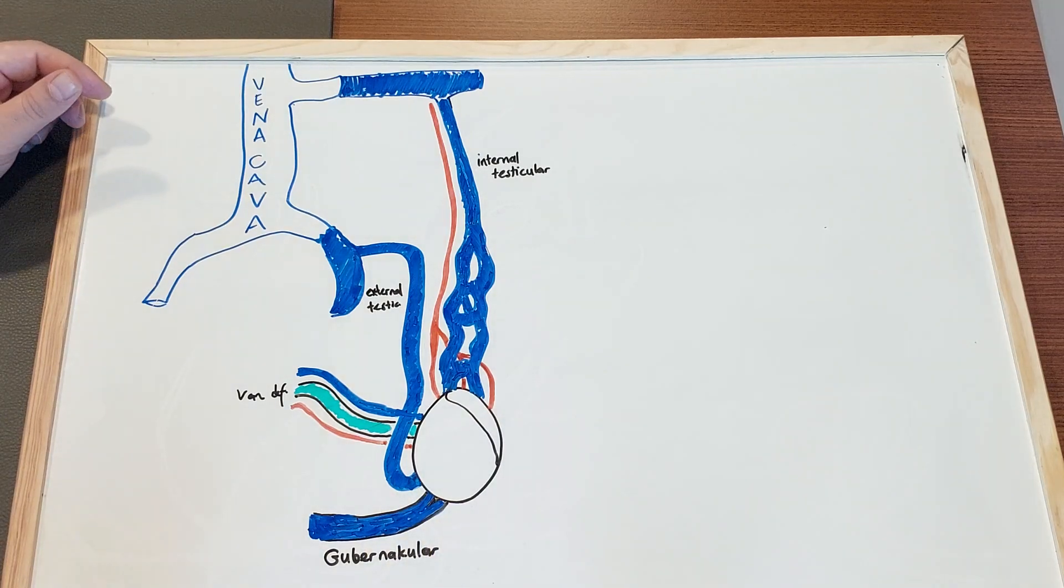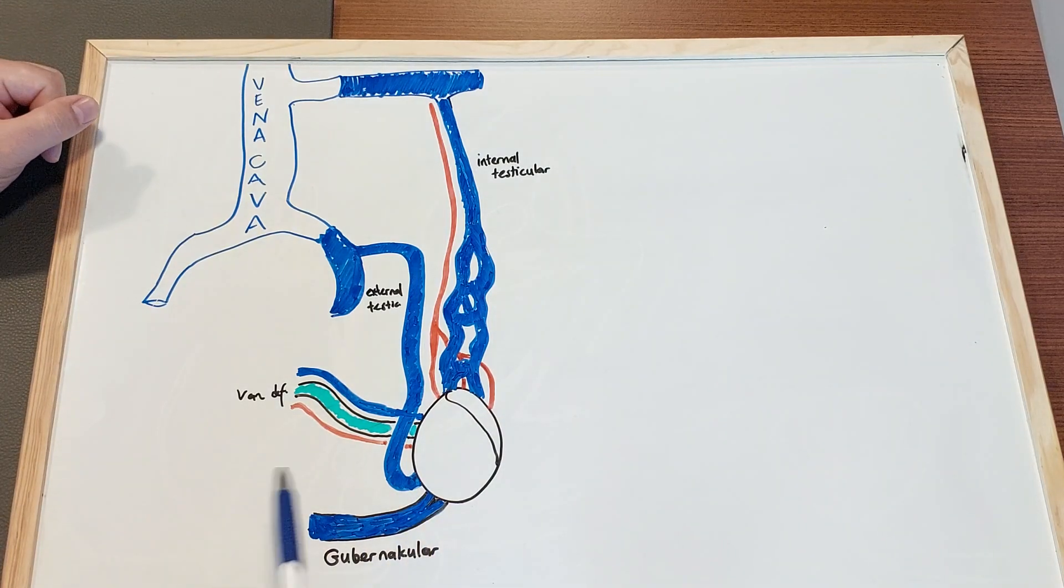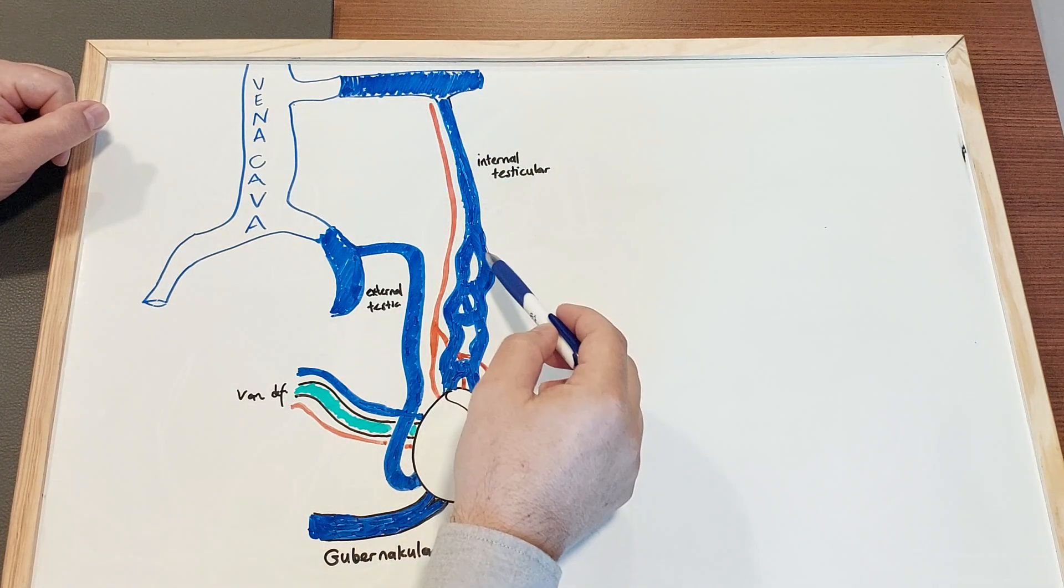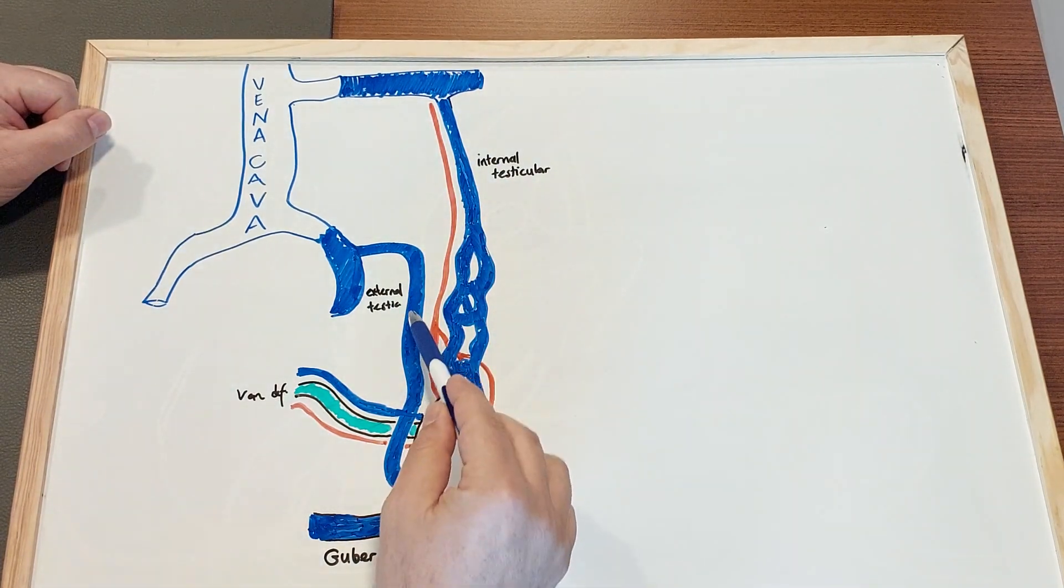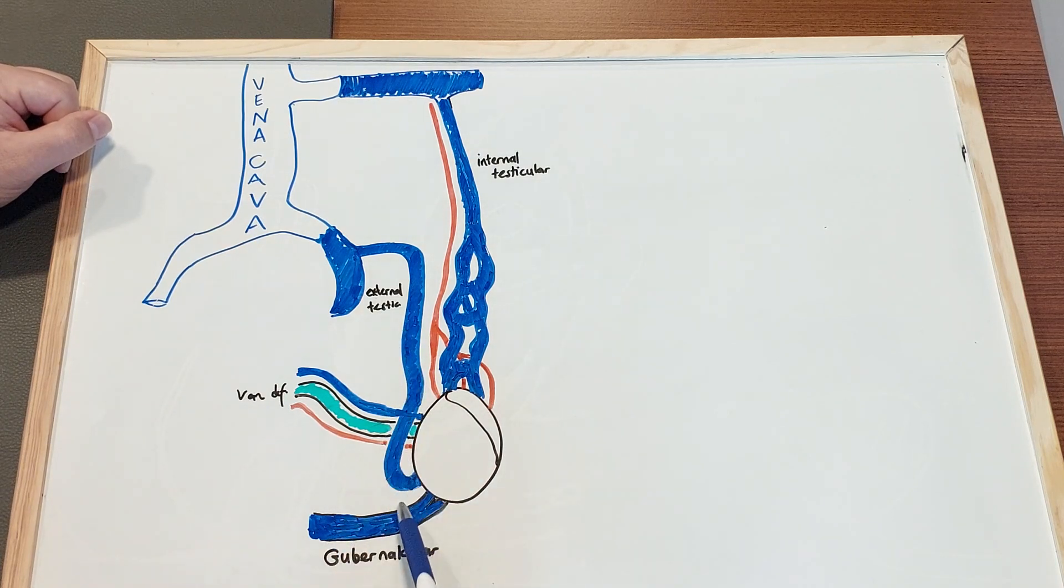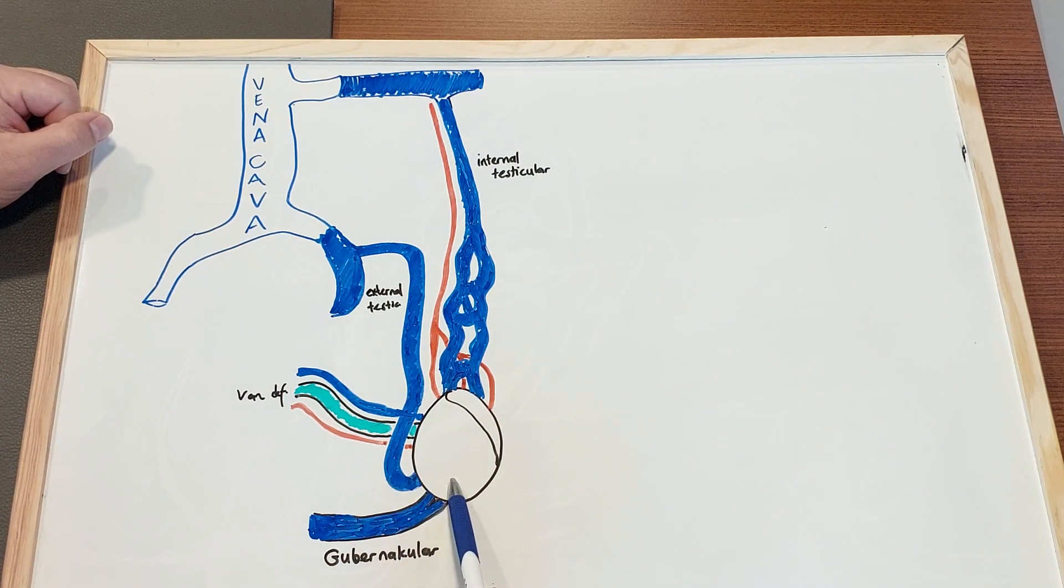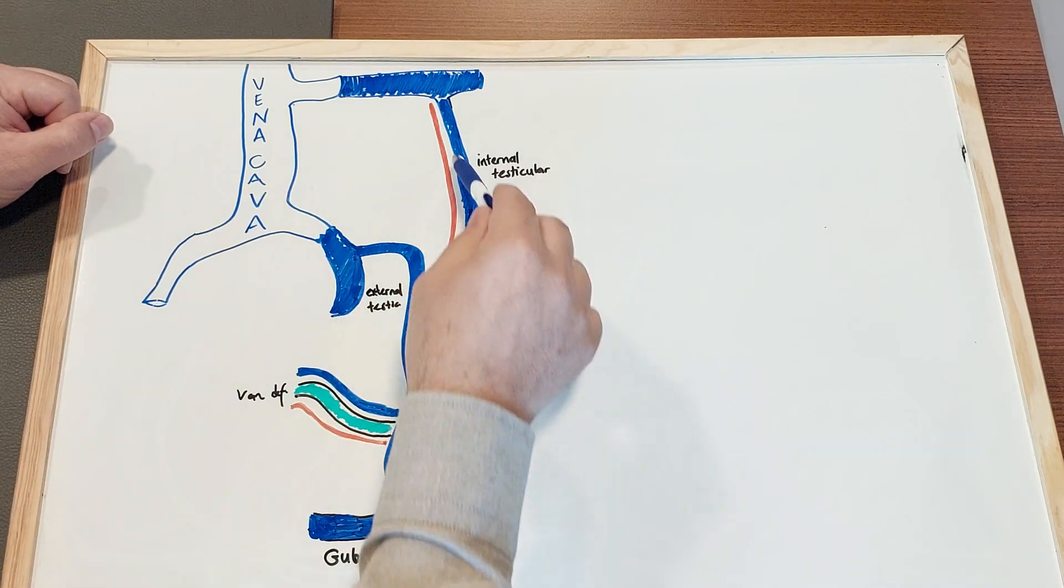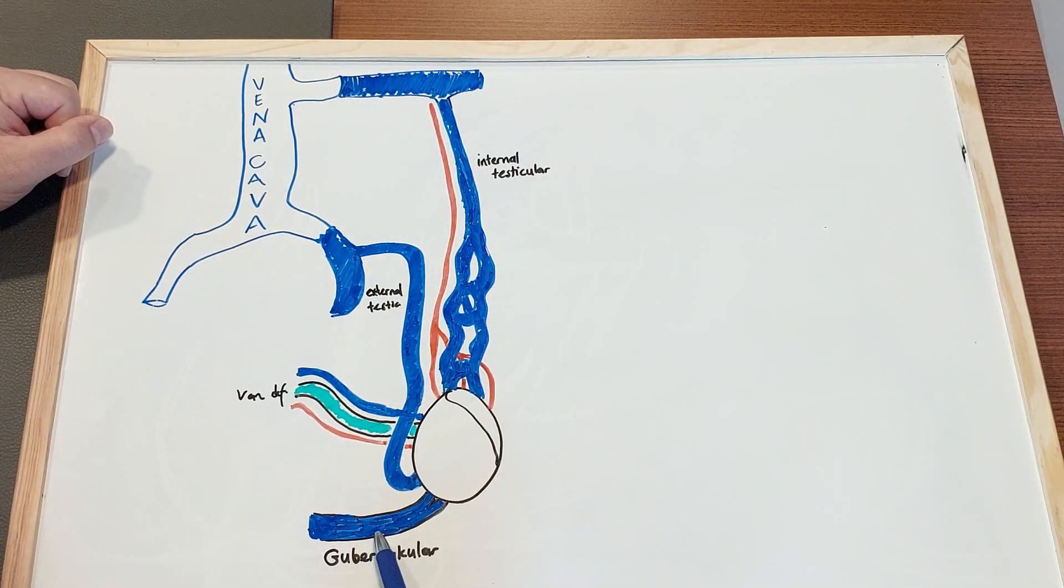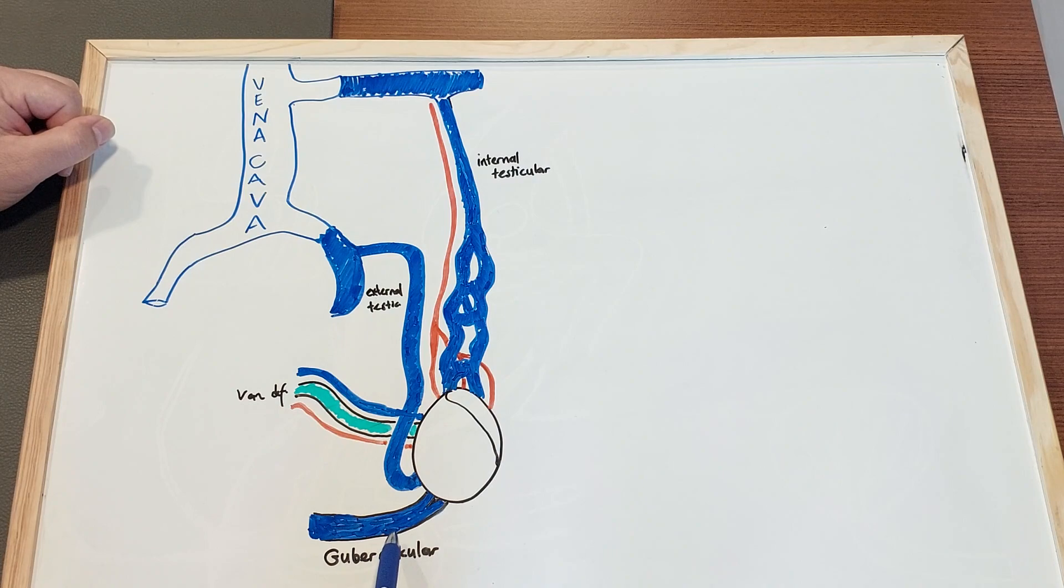Why are they recurring? Because in these operations, in these procedures, it's not possible to reach the other two main vascular systems of the testis. One is external testicular vein - you can't reach it from this route. The other is gubernicular veins - you can't reach this venous system.